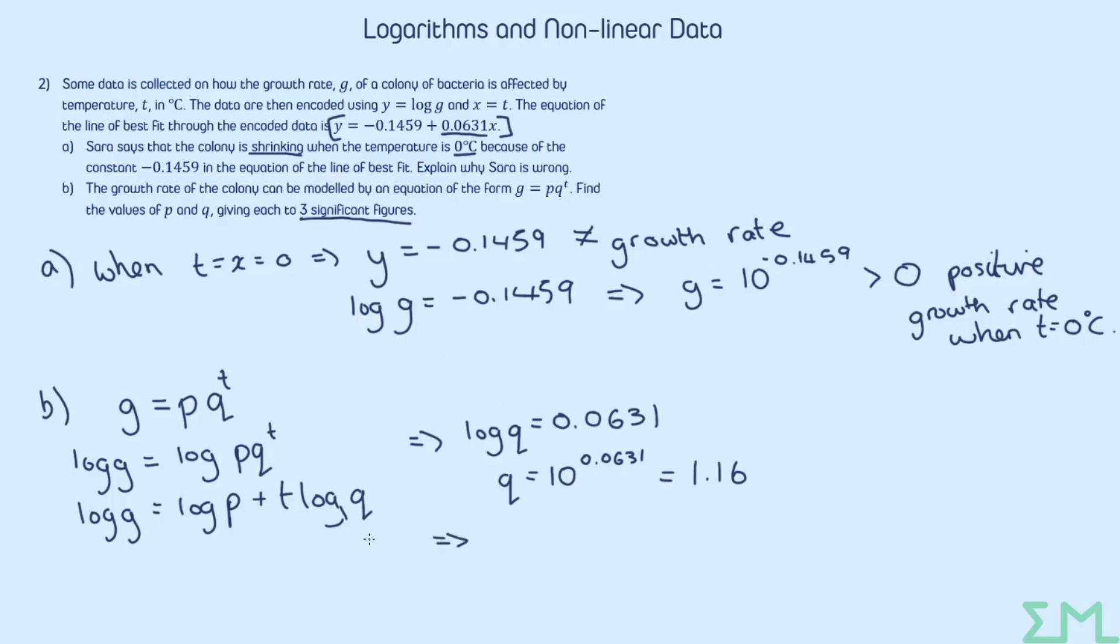And then we also have the constant term. So log P will be equal to the negative 0.1459. So log P, negative 0.1459. Same process, raise that up to the power of 10, negative 0.1459. And that comes out as 0.715.